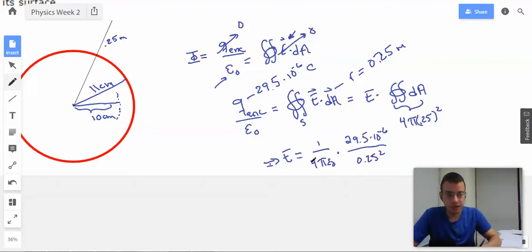And this right here we know is the same as K, which is 8.99×10⁹.